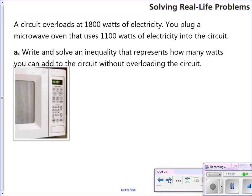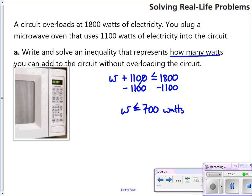Next one. A circuit overloads at 1,800 watts of electricity. You plug a microwave oven that uses 1,100 watts of electricity into the circuit. And solve an inequality that represents how many watts you can add to the circuit without overloading it. So, kind of like our money, we couldn't go over 1,500 before. Now, we can't go over 1,800. So, let's let W equal how many watts. That's what we're trying to answer. The watts that I have left plus the 1,100 that the microwave is already using has to be less than or equal to the 1,800 watts that that circuit allows. I'm going to solve that for W. I would subtract 1,100 from both sides. And W is less than or equal to 700 watts. So, whatever else I plug into that outlet has to use 700 watts or less if I don't want to overload that circuit.